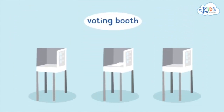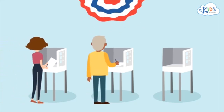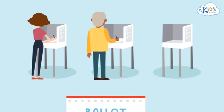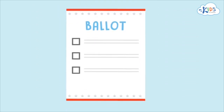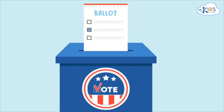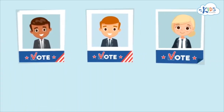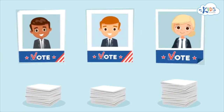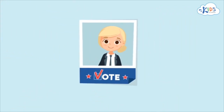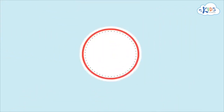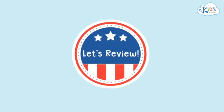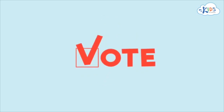Inside there are many voting booths. These booths help people keep their votes private. The voters select their choices on a ballot and put it in the ballot box. Some voting booths have special computers instead of ballot boxes. After all the votes have been counted, a new leader is chosen. When people vote, they make important choices.